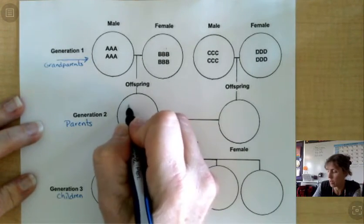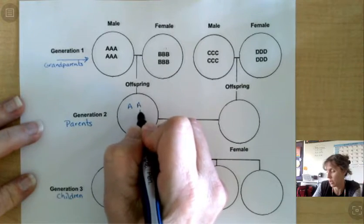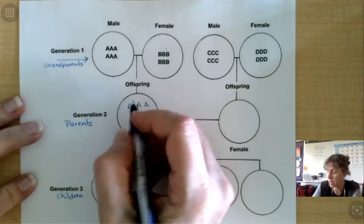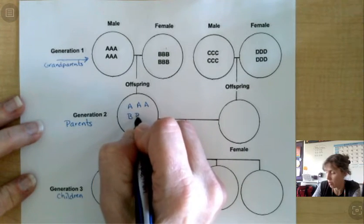So you have three from Grandpa and three from Grandma. Really, there's no other way to do this than just really, these are all As, so we'll just take all As. And these are all Bs, so we'll just take all Bs.